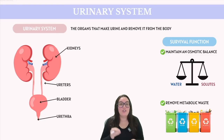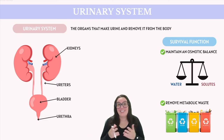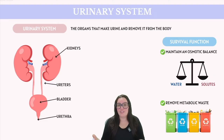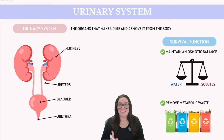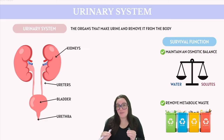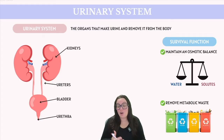The urinary system is designed to address these two critical issues, with various organs and structures contributing to its function. The skin plays a role in excreting water and other substances. The liver is heavily involved in detoxification and produces urea, and the lungs are responsible for expelling carbon dioxide. These organs also participate in other body systems — the skin is part of the integumentary system, the liver assists with digestion, and the lungs are crucial to the respiratory system. Our primary focus today is on the kidneys, which are a key player in the urinary system, but all these systems work concurrently to help maintain these survival balances.